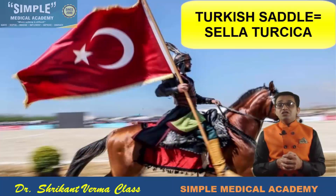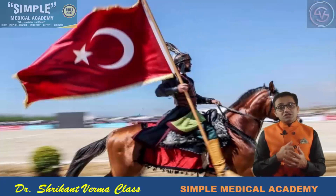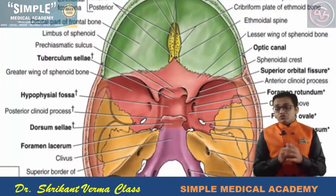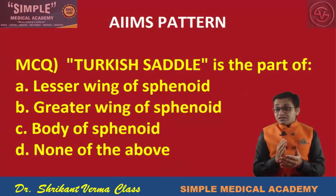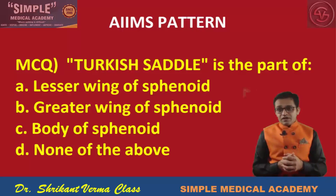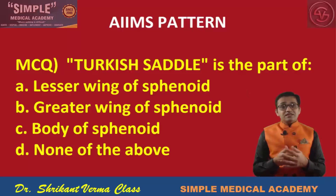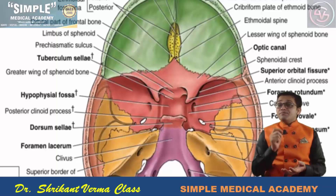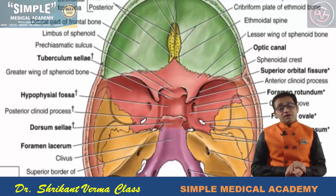So this body of sphenoid is also known as Sella Turcica. A recent MCQ asks: 'Turkish saddle is the part of which structure?' — options being lesser wing, greater wing, body, or none of the above. The answer is that the Turkish saddle is the part of the body of sphenoid. This question is asked again and again because the Sella Turcica, or Turkish saddle, is the home for the pituitary gland. The hypophysis cerebri — the pituitary gland — lies within this Turkish saddle.